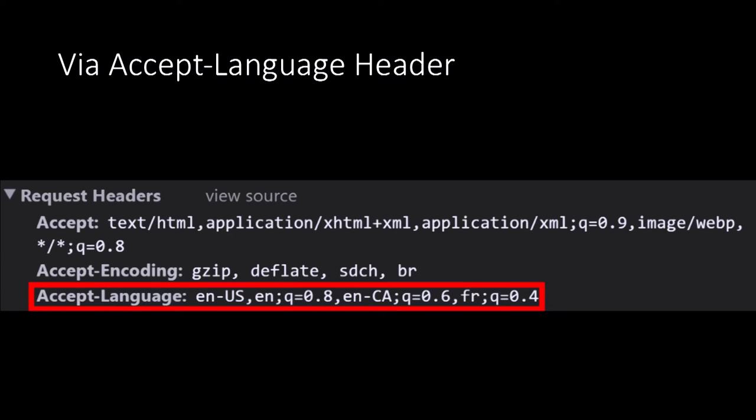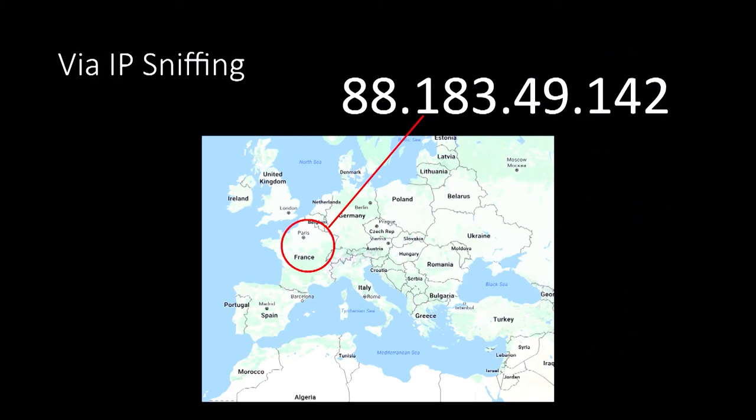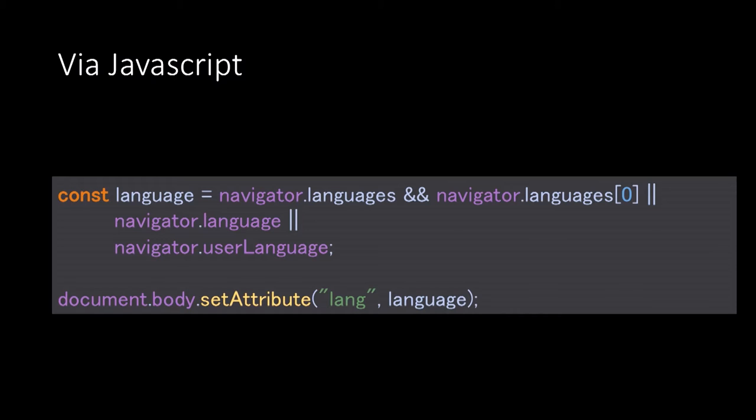Another thing you can do is use the Accept-Language header. This is kind of the de facto solution — you check the HTTP request, it's included with the HTTP 1.1 specification, and you can check the language set in the browser configuration. You can also do it with IP sniffing; you can see here this was geolocated to France. You can also use JavaScript to set the language — basically the same as the Accept-Language header — and this is actually what I'm going to show you how to use in conjunction with CSS.